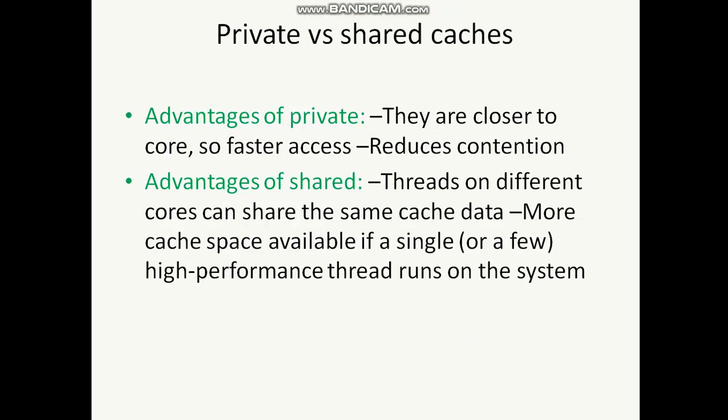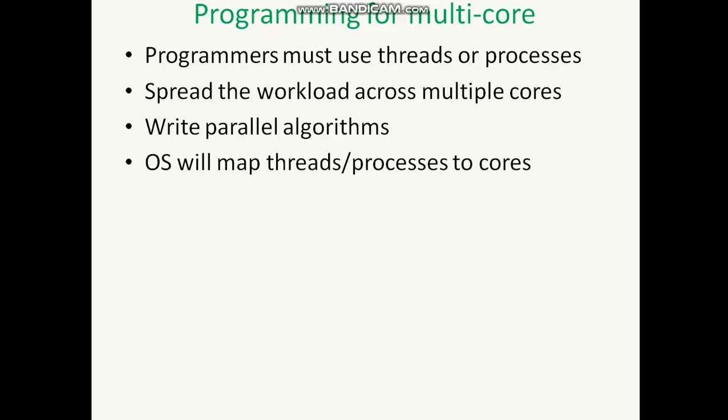We discussed the terms private and shared cache. There are certain advantages and disadvantages with respect to each. In the case of private cache, it is very close to the respective cores, so access can be fast and there is reduction in contention. In the case of shared cache, the cache space is shared among two different cores in a dual-core setup, making cache space available and allowing high-performance threads to run, since the cache is used by both Core 0 and Core 1.